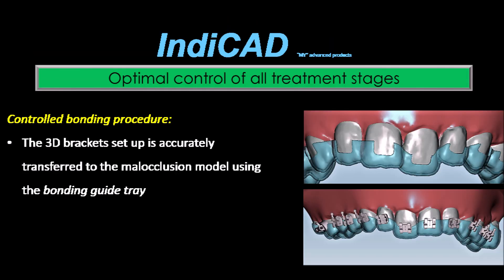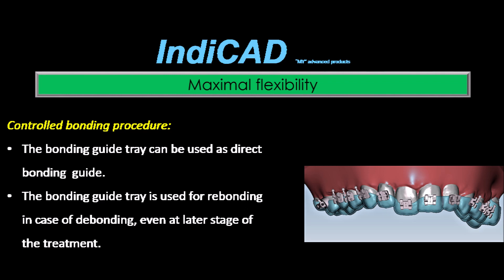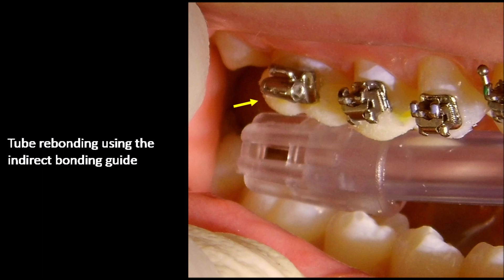Another interesting feature is the bonding tray. The bonding guide tray is a 3D-printed key based on the digital bracket setup, used to manufacture the indirect bonding tray. IndyCAD offers maximum flexibility, as the bonding guide tray can be used for direct bonding or for rebonding in case of bracket debonding or loss — a feature not common in other systems. At any time during treatment, the bonding guide tray can be used for rebonding simply by cutting the tray at the required teeth.